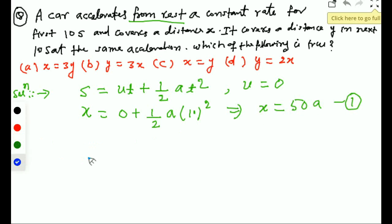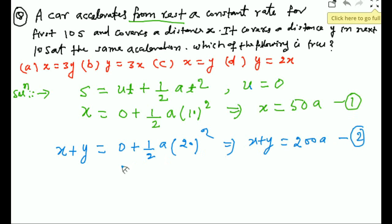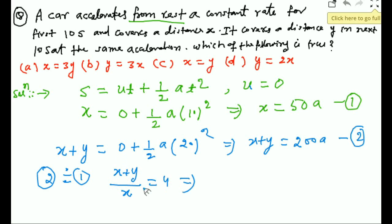For distance y, the total distance in 20 seconds from the start is x + y. So x + y = ½ × a × 20² = 200a. This is the second equation. Dividing equation 2 by equation 1: (x + y)/x = 4, which gives y = 3x. So option B is correct.